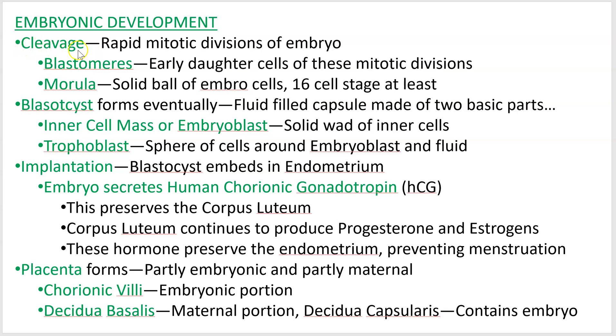These early embryonic divisions are called cleavage. Cleavage is just mitotic division and results in daughter cells which are called blastomeres — they have a specific name.